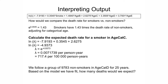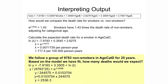The next question asks: if we follow a group of 9,783 non-smokers in age category D for 25 years, how many deaths would we expect? We follow a similar process as when calculating the rate, but adjust our offset for the number of participants times the number of years — 9,783 times 25, which equals 244,575. We then move this to the right side of the equation to get the expected number of deaths, which equals 2,536 deaths.